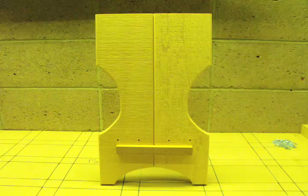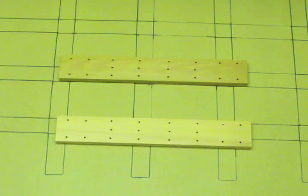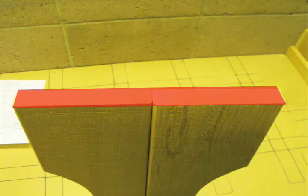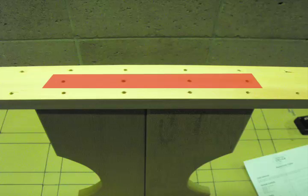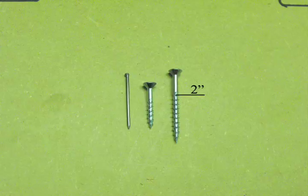Stand the first leg assembly upright. Using one of the cleats (B), align the middle holes on the top of the leg assembly as shown. Attach the cleat to the top of the leg assembly using four two-inch screws.